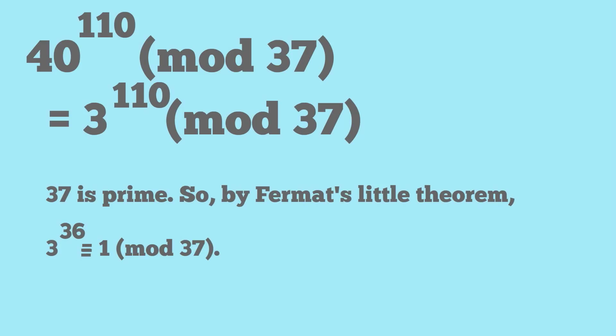So anything basically to the power of 36, which is 1 less than 37, will give us 1. That's as a result of Fermat's little theorem. So basically what I'm saying is that we know from that theorem that 3 to the power of 36 is equivalent to 1.